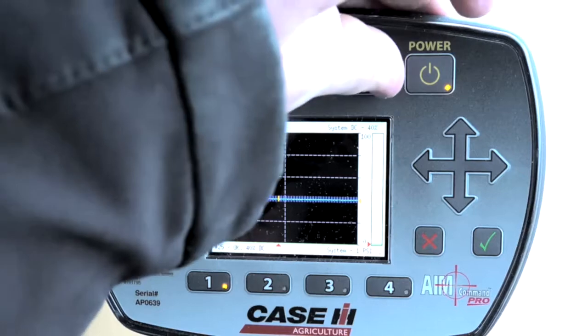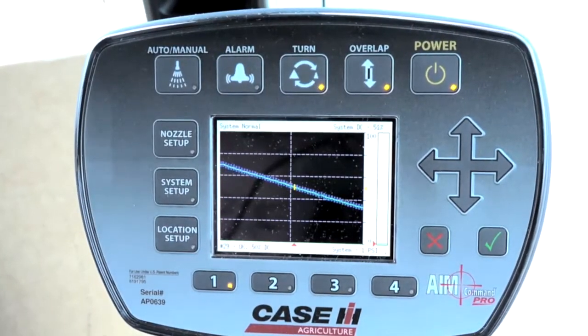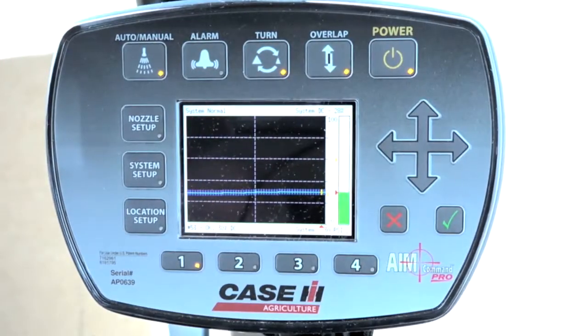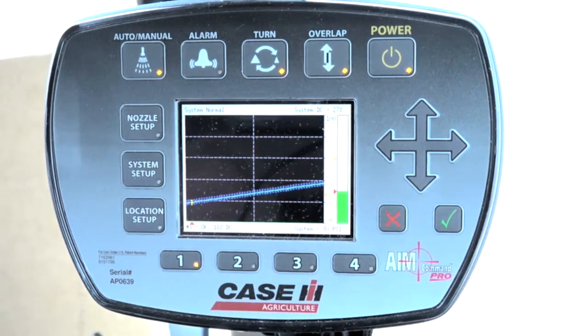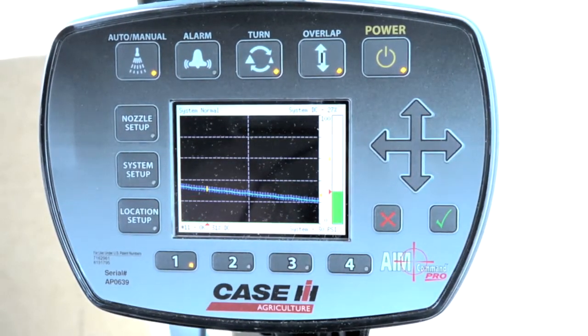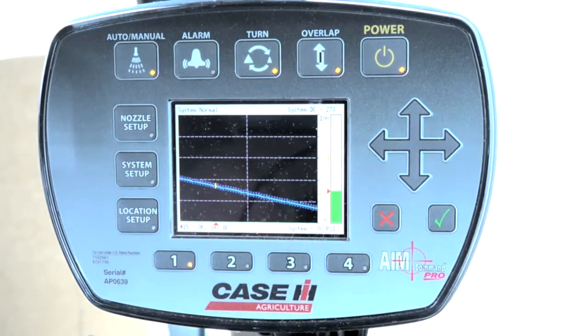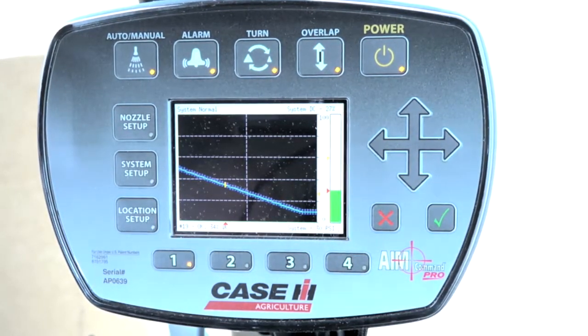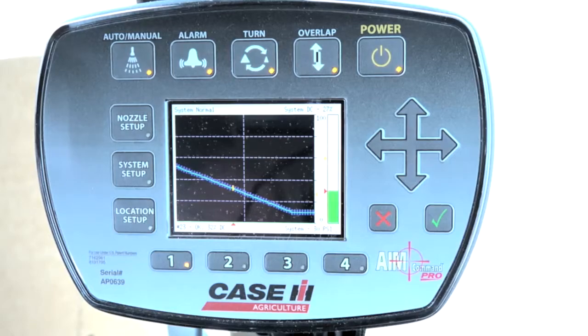To enable overlap control, the operator simply needs to hold down the button. The operator will see the LED on the button illuminate notifying them that the overlap control feature has been enabled. If any issues are present that will cause overlap control to not function correctly, a series of visual and audible alarms will alert the operator.